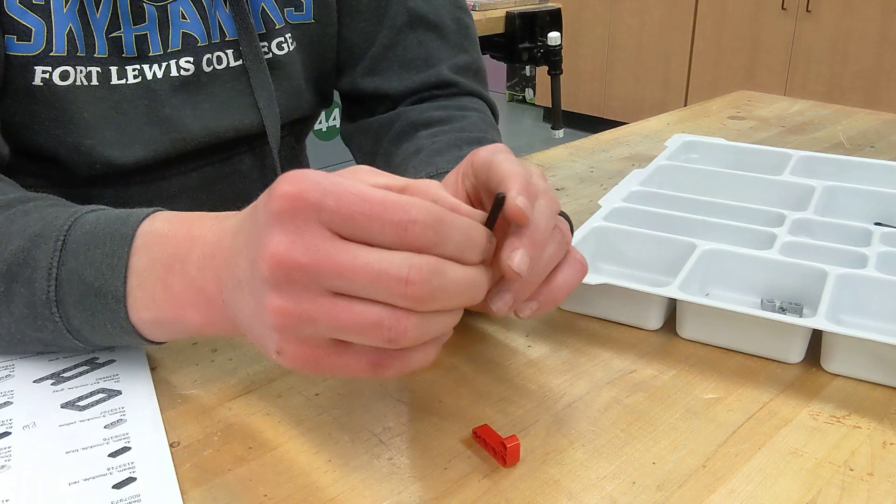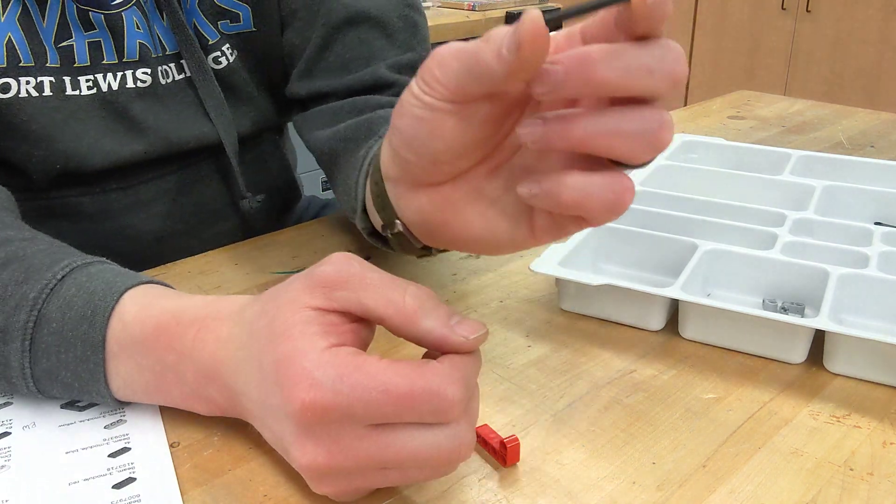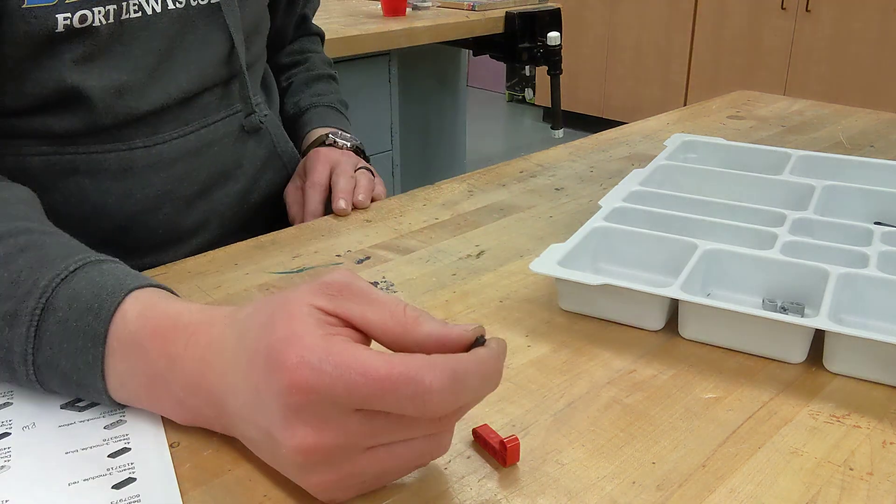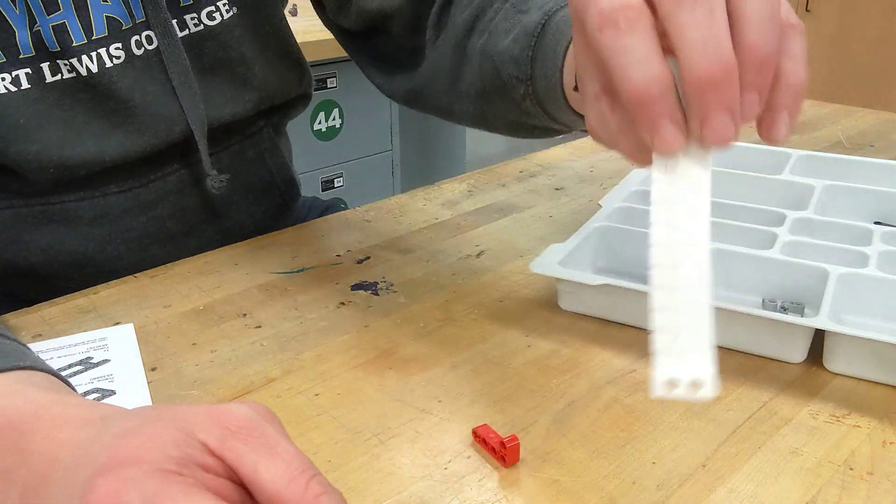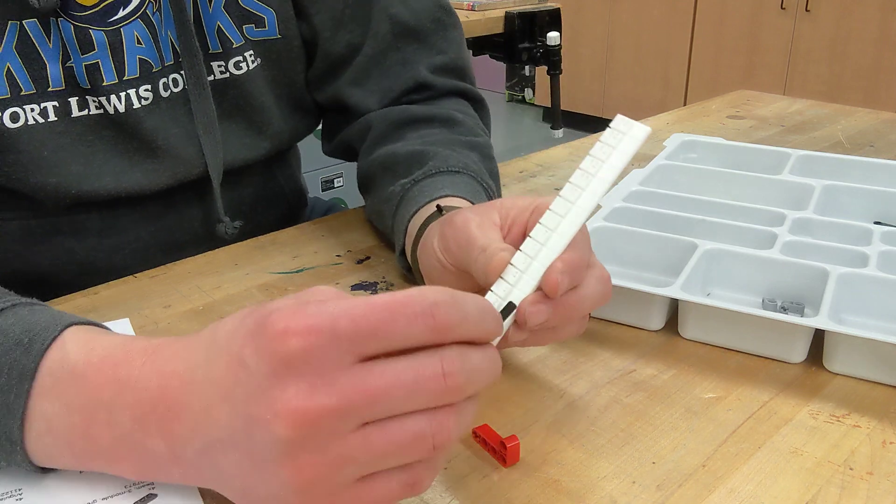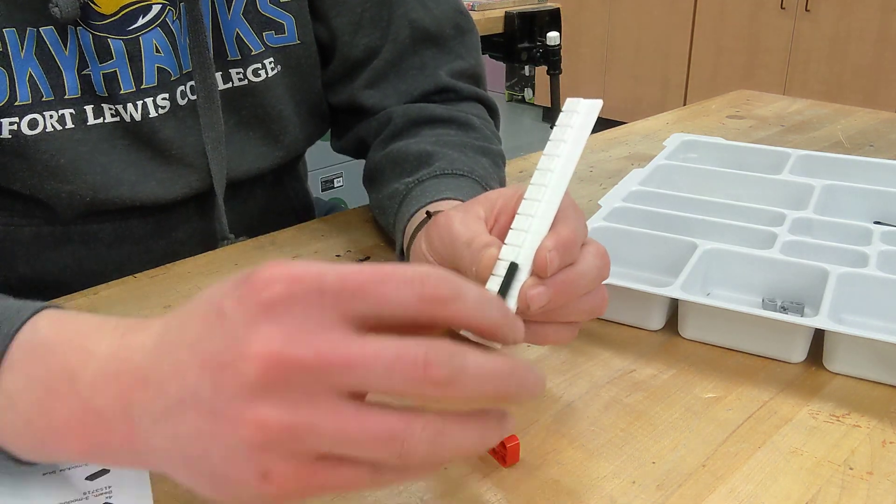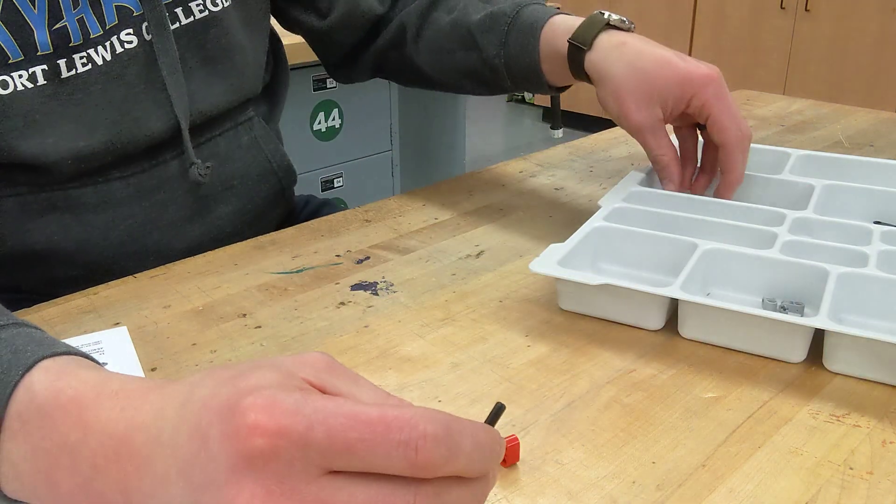And then we're going to need three of these axles, four modules. And if you need to figure out the length, you'll grab one of these rulers, hold it like that. It will tell us that's a mod four.